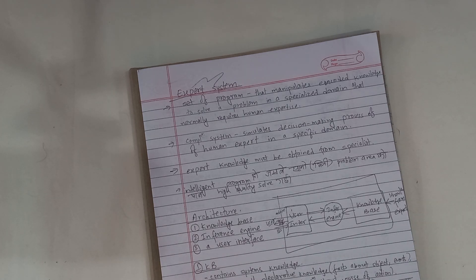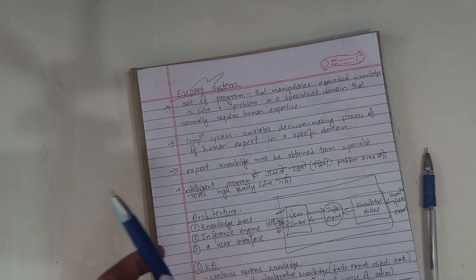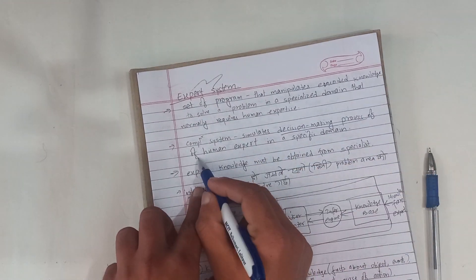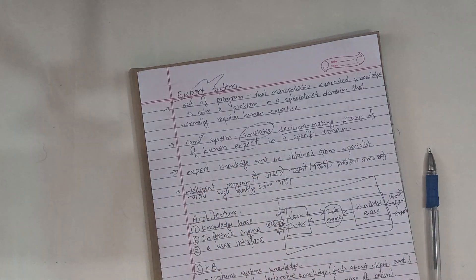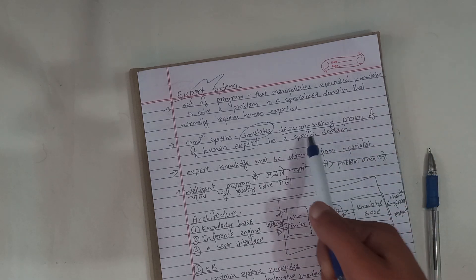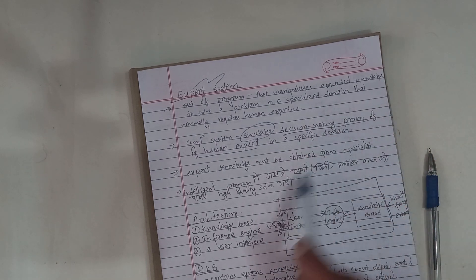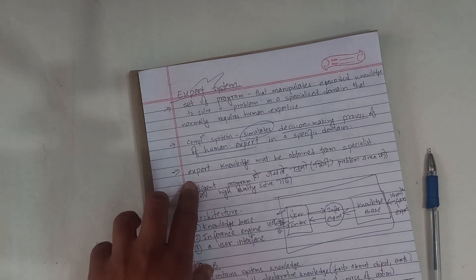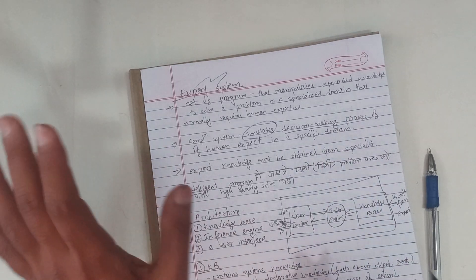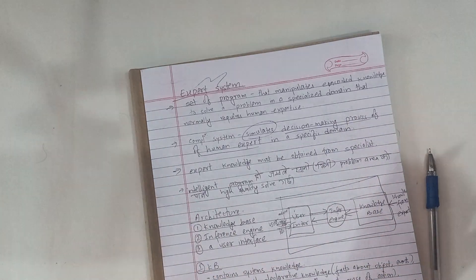The computer system uses the decision-making process of human experts — we have to simulate that in a specific domain. The experts know that the specific domain can solve a problem. Expert knowledge must be obtained from a specialist; the expert system is used when we have to solve a specific domain.